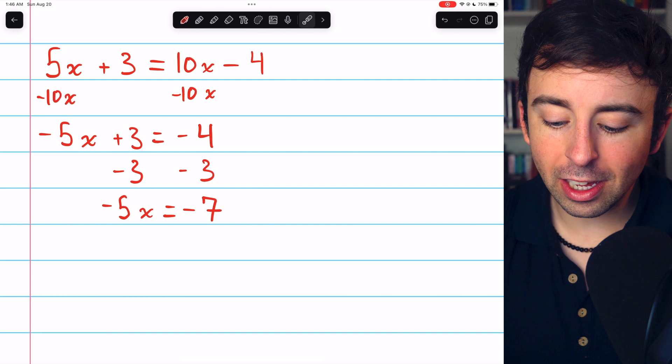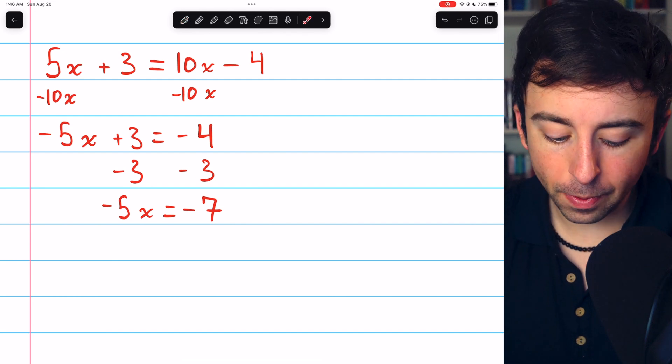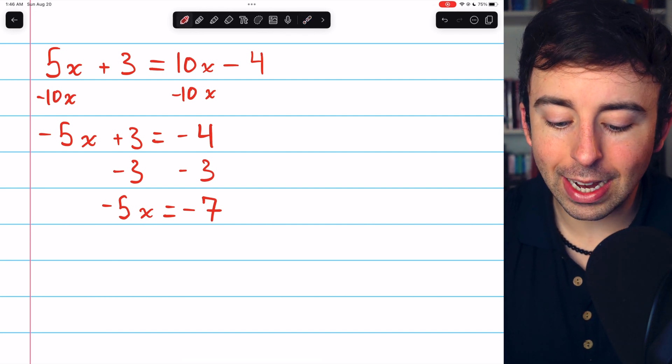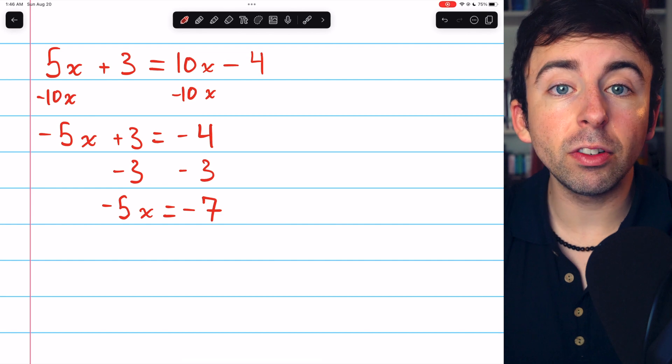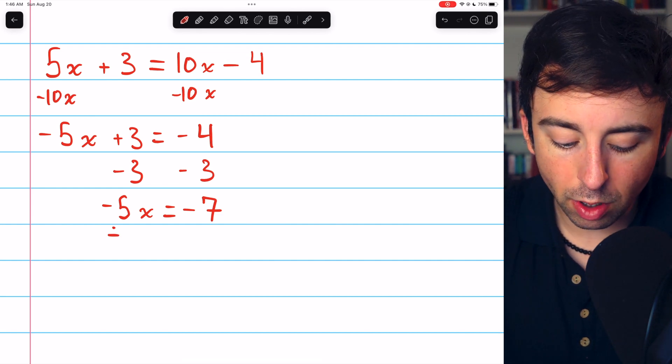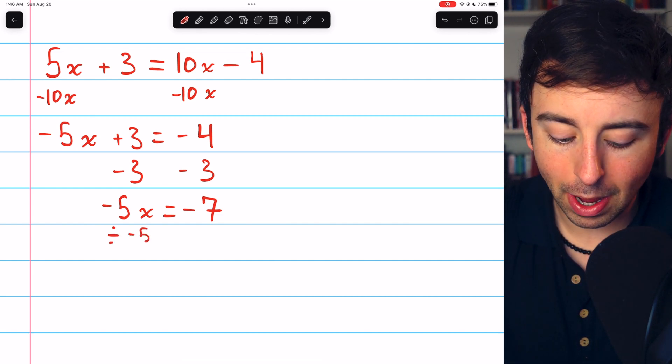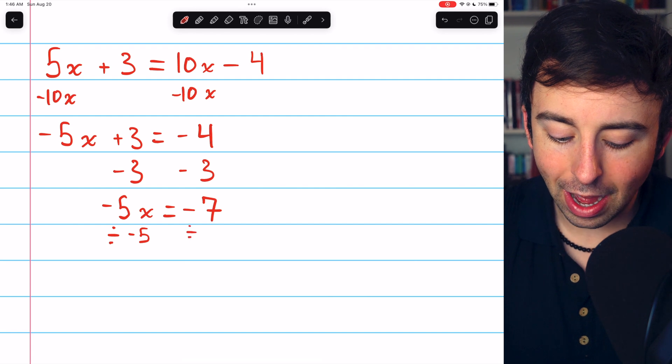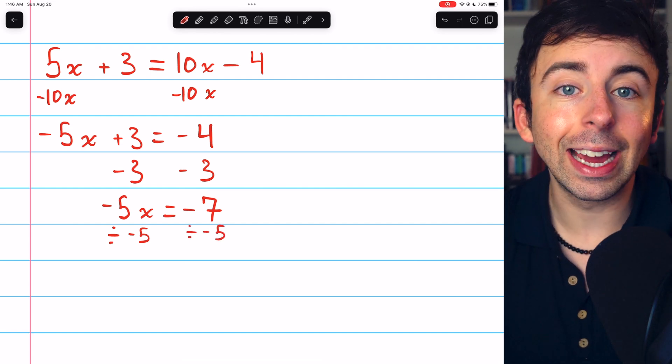Finally, the only thing being done to x right now is that it's getting multiplied by negative 5. So to finish solving the equation, we need to divide the left side by negative 5 and divide the right side by negative 5.